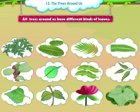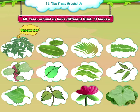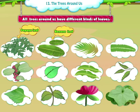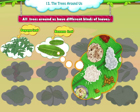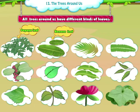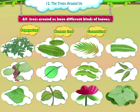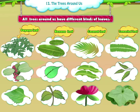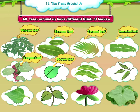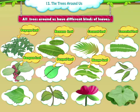All trees around us have different kinds of leaves. Let us have a look at what varieties of leaves we have. The first one is the papaya leaf. Then comes the banana leaf, on which at times food is also served. The coconut leaf, the tamarind leaf, the banyan leaf, the pepper leaf, and the mango leaf.